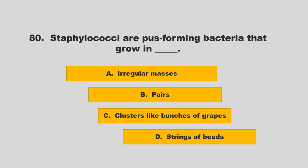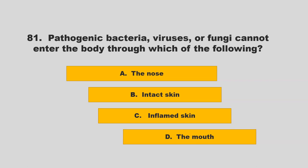Options for staphylococci growth patterns: irregular masses, pairs, clusters like bunches of grapes, or strings of beads. The correct answer is C: clusters like bunches of grapes.